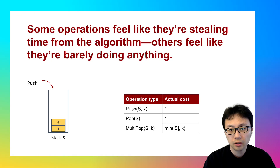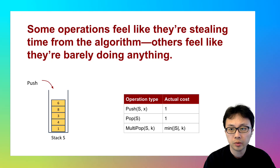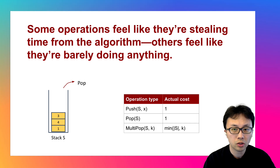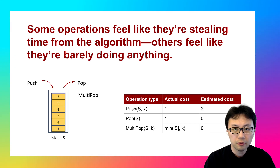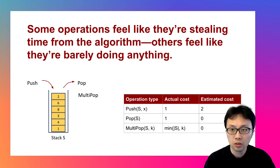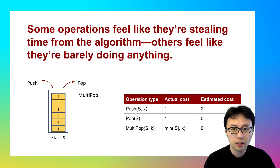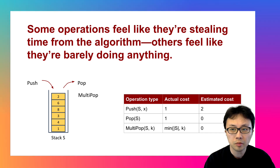Some operations feel like they are stealing time from the algorithm, while others feel like they are barely doing anything. What if we could charge each operation a fair price, even some of them are secretly expensive? That's the idea behind the accounting method in amortized analysis.